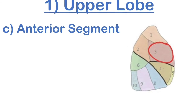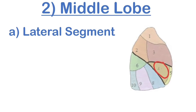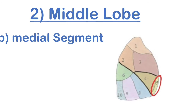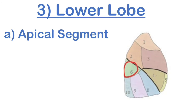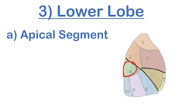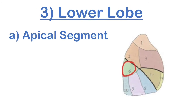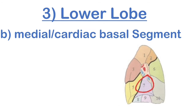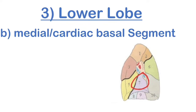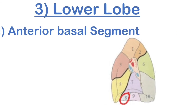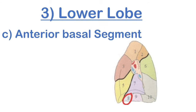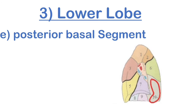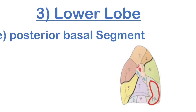Next is the anterior segment of the upper lobe. The next lobe is the middle lobe — the first segment is the lateral segment, and the middle segment of the middle lobe. The next lobe is the lower lobe, where the first segment is the apical segment (sixth). The second is the medial or cardinal basal segment, then the anterior basal segment of the lower lobe, and the lateral basal segment of the lower lobe.